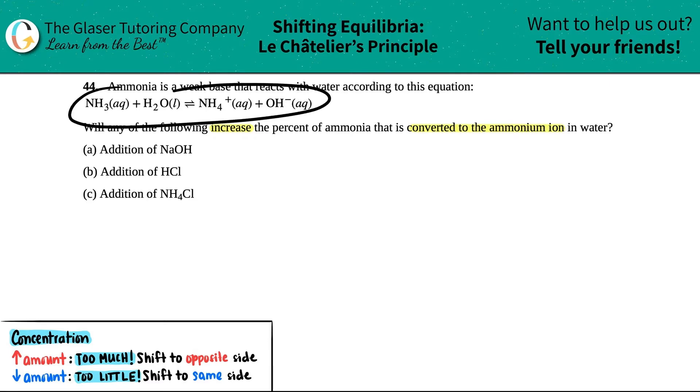So the first thing I'm going to do is rewrite this a little bit bigger so we can work with it. So I got NH3, that's ammonia, a weak base, reacting with water, and it comes to equilibrium with NH4 plus, the ammonium ion, and OH minus.